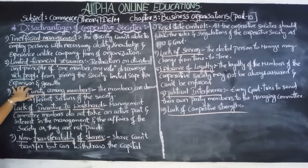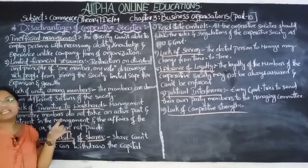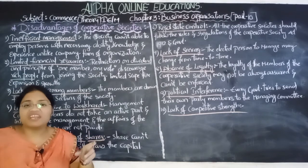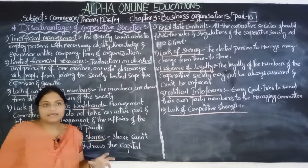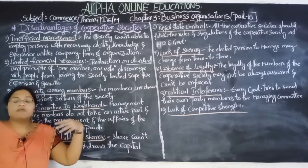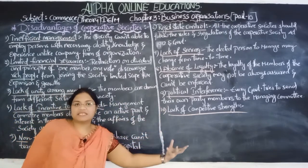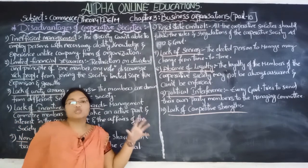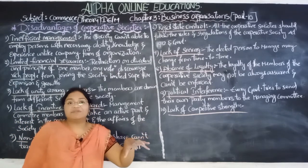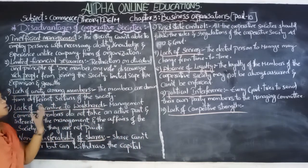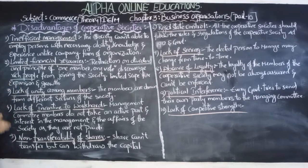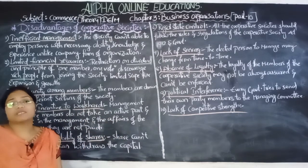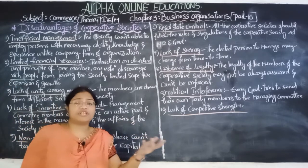Limited scope for expansion and growth: due to limited financial resources, the growth and expansion of the cooperative society is very limited because rich persons are not participating. The persons who participate may belong to weaker sections — economically or socially weaker sections or common people. The rich people are absent and capital is very limited, making it very difficult to expand or grow. That is why they generally depend on loans from the government or other cooperative societies for funds.